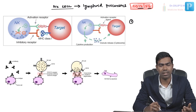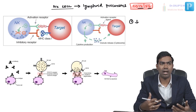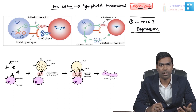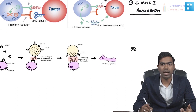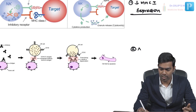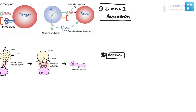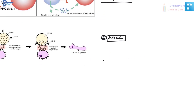The first way NK cells kill is by detecting cells that have reduced MHC class 1 expression — those cells are targeted for killing. The second mechanism is ADCC, antibody-dependent cell-mediated cytotoxicity. The third mechanism is cytokine production — by producing cytokines they can also exhibit killing.